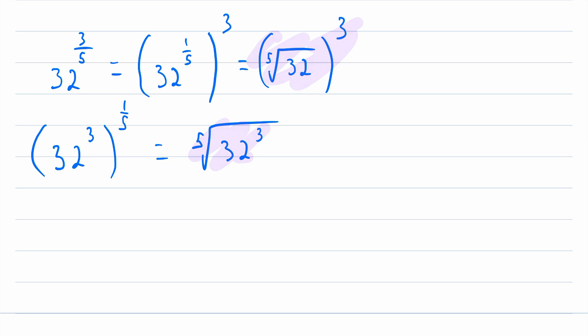However, you might notice that one of these is easier to compute. It doesn't really matter if you have a calculator, but offhand, I don't know what 32 to the power of 3 is. I could figure it out, but it'd be easier to look at this expression, because I know what the fifth root of 32 is. The fifth root of 32 is just 2, and then that needs to be cubed. So this is equal to 8. And we would get the same thing down here.